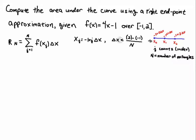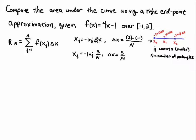To get delta x, you take the width of the interval, which is two minus minus one, giving a width of three, then divide by the number of rectangles. So delta x equals three over n. We then substitute that delta x into the grid points, giving x sub j equals minus one plus j times three over n.